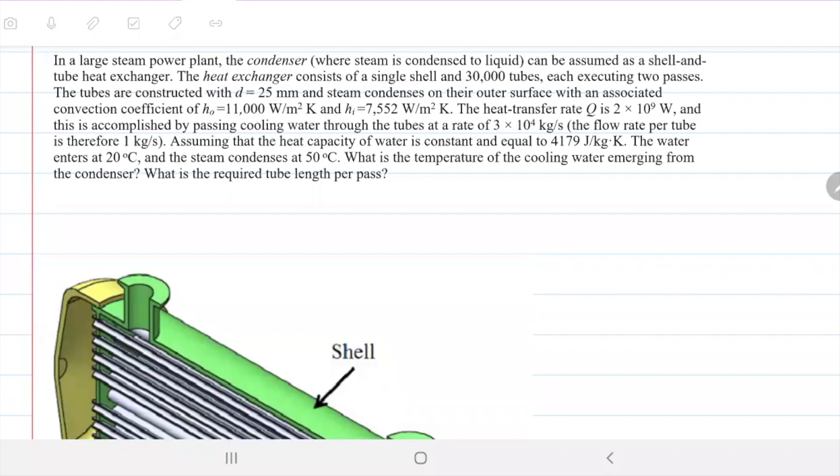In a large steam power plant, the condenser where steam is condensed to liquid can be assumed as a shell and tube heat exchanger. The heat exchanger consists of a single shell and 30,000 tubes, each executing two passes.